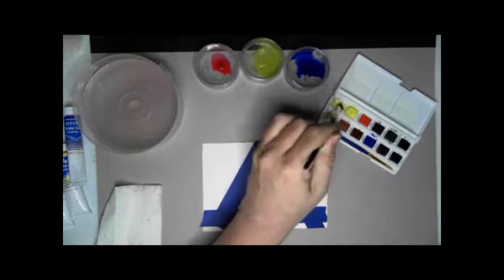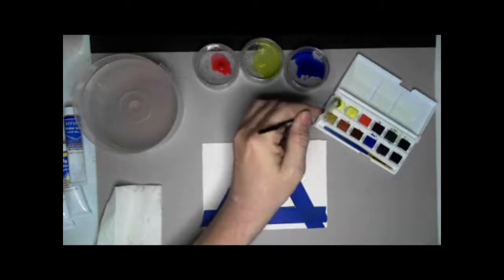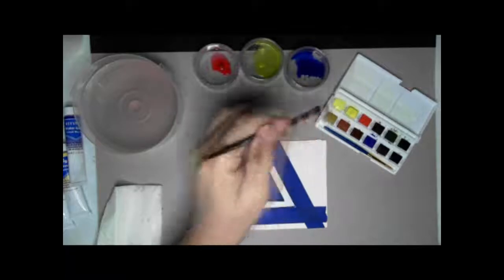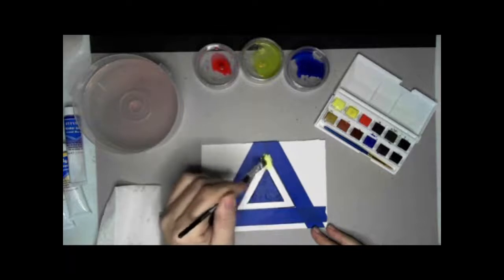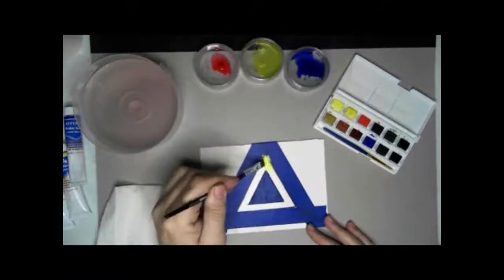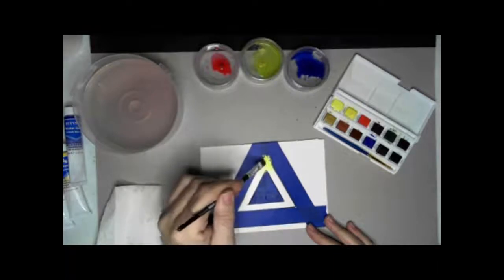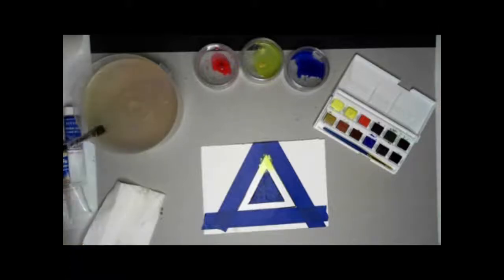Right now I am picking up some lemon yellow. I'm going to put it right up at the top here. Put a pretty good amount of it there. So a really nice bright yellow. I'm going to wash my brush out really quickly, blot it out a little bit, make sure I got the color out.